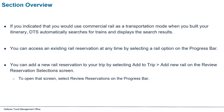If you indicated that you would use commercial rail as a transportation mode when you built your itinerary, DTS automatically searches for trains and displays the search results. You can access an existing rail reservation at any time by selecting a rail option on the progress bar. You can add a new rail reservation to your trip by selecting 'Add to Trip', then 'Add New Rail' on the review reservation selection screen. To open that screen, select 'Review Reservations' on the progress bar.